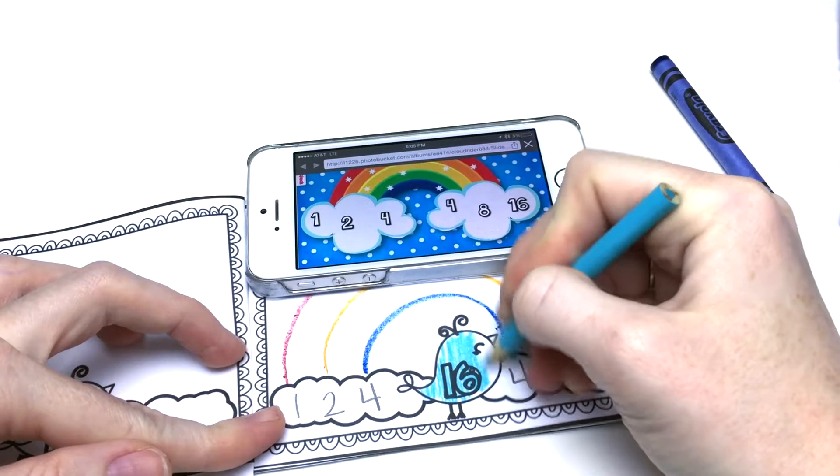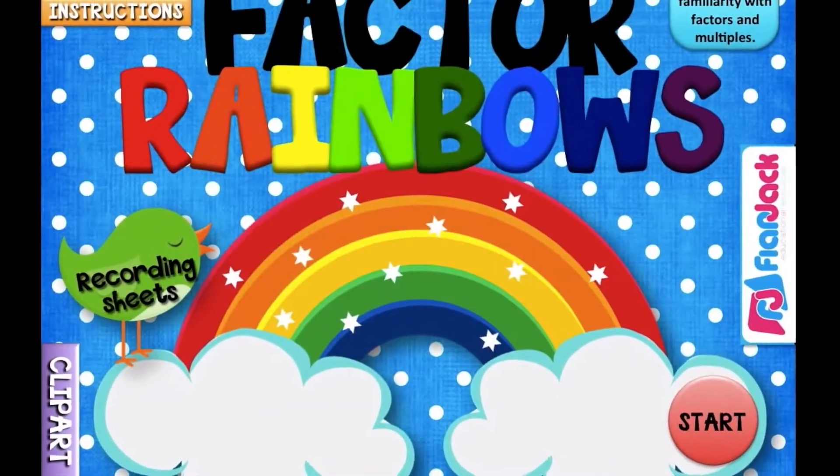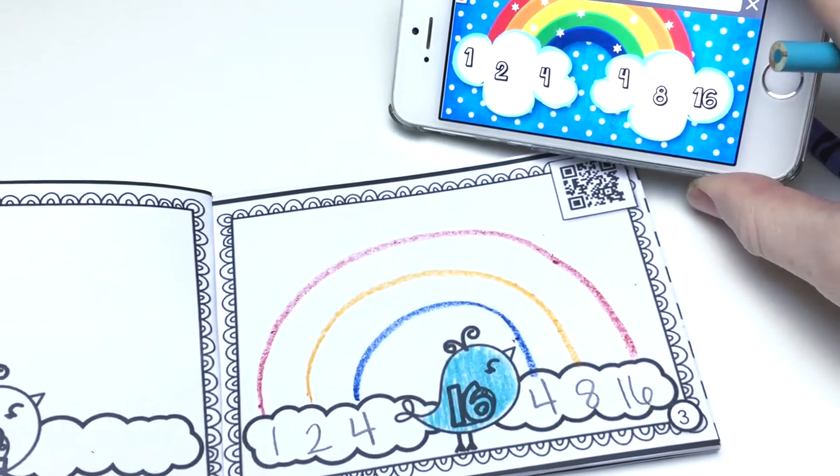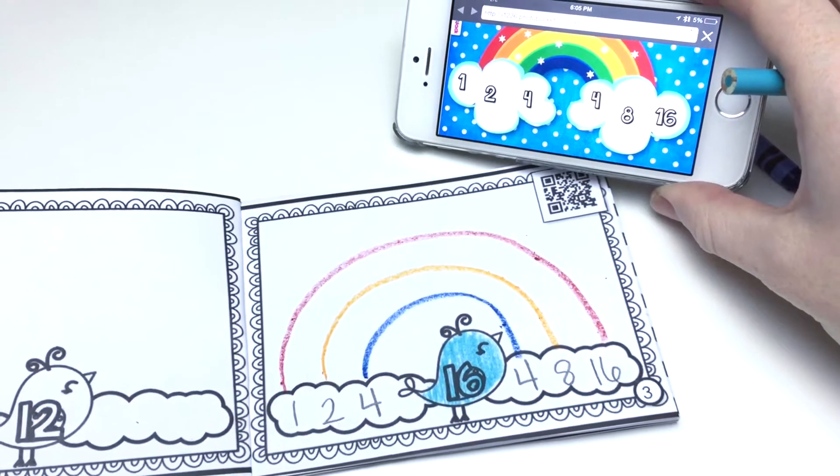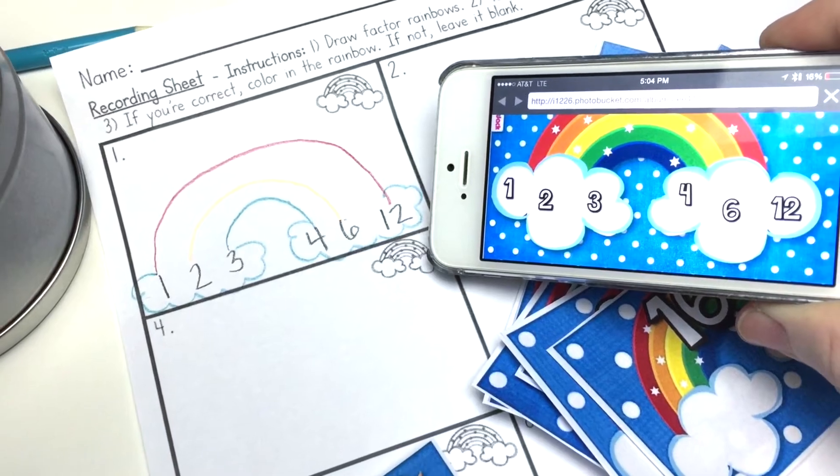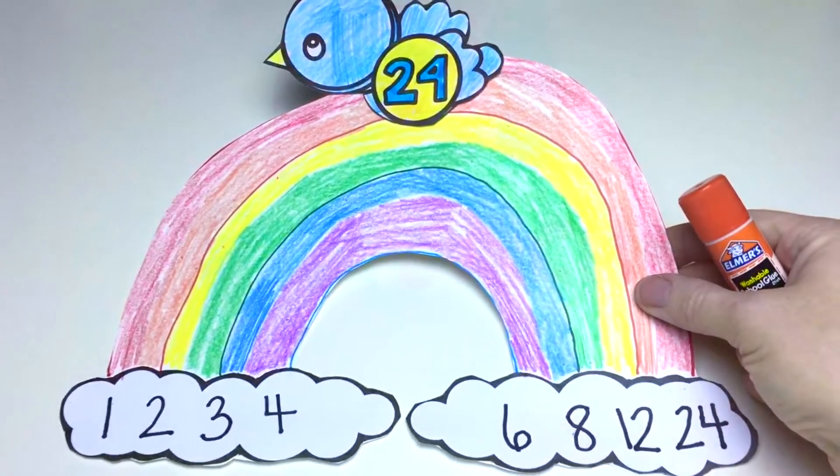If you're interested in this Factor Rainbows activity bundle, the link is in the description box. Remember that for QR codes, you need internet access on your device. Thanks so much for being here. I hope you'll subscribe to Flapjack for more activities that make learning fun.